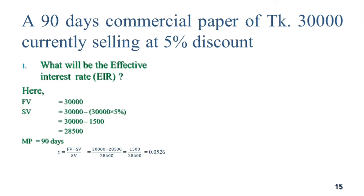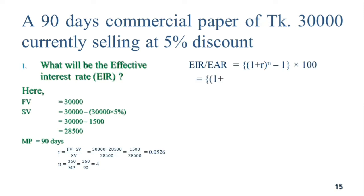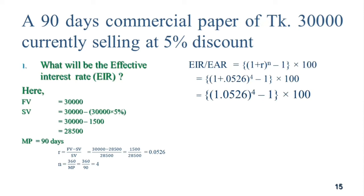Now let me say 0.05 — among any values, 4. 0.0526 power 20 is... calculator: power 20 is 7.2 — 2 to 7, 5, 1, 2.